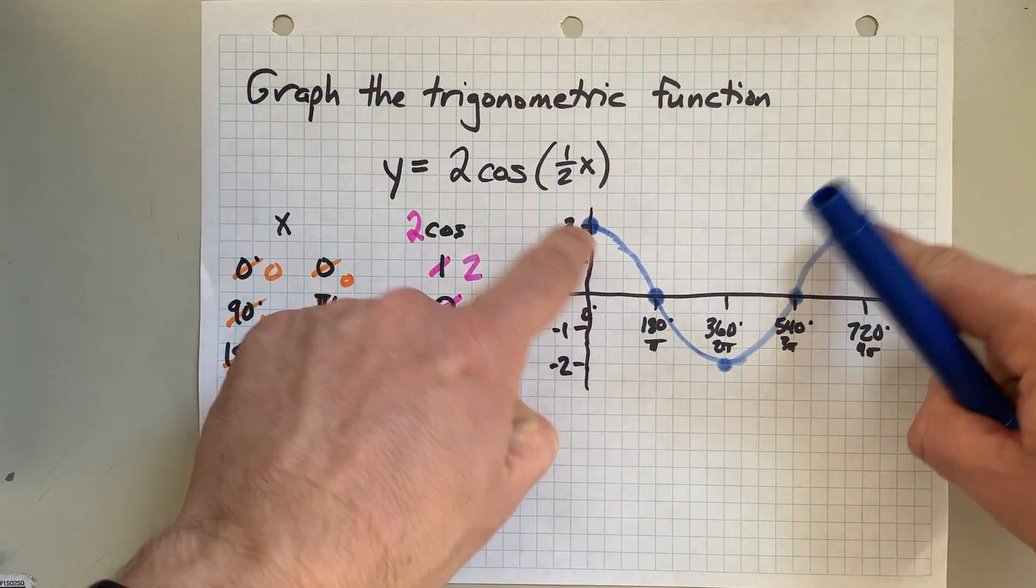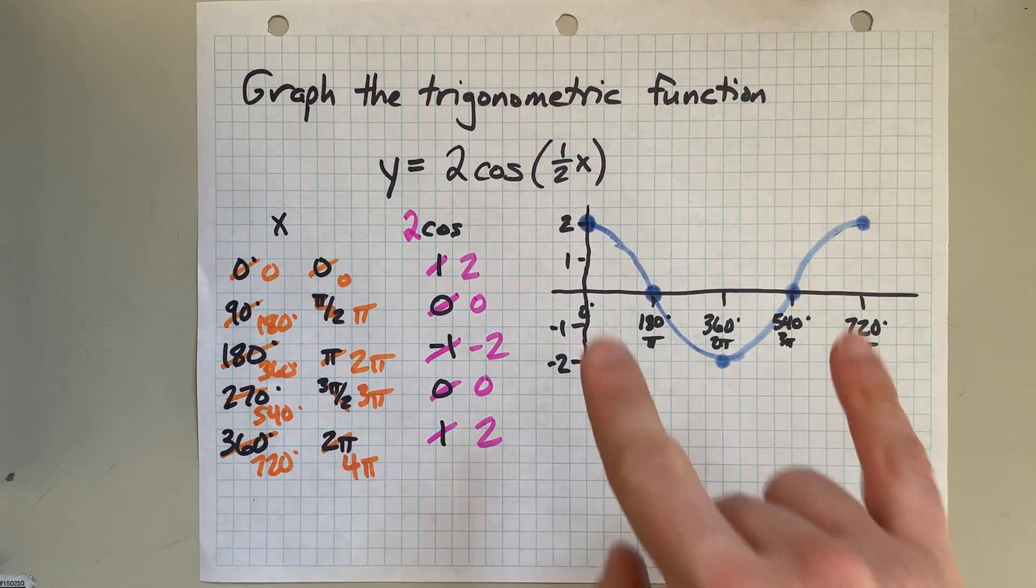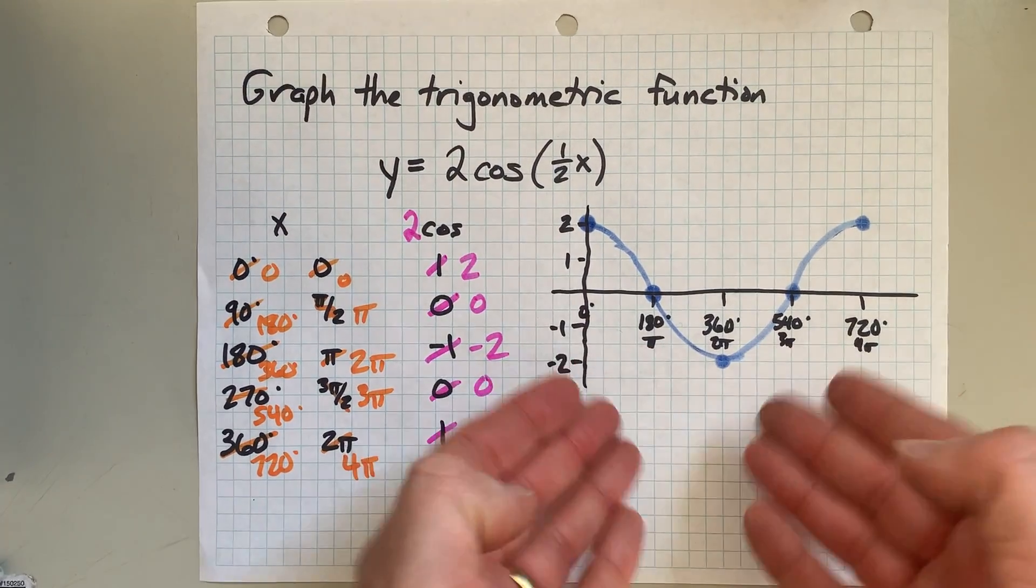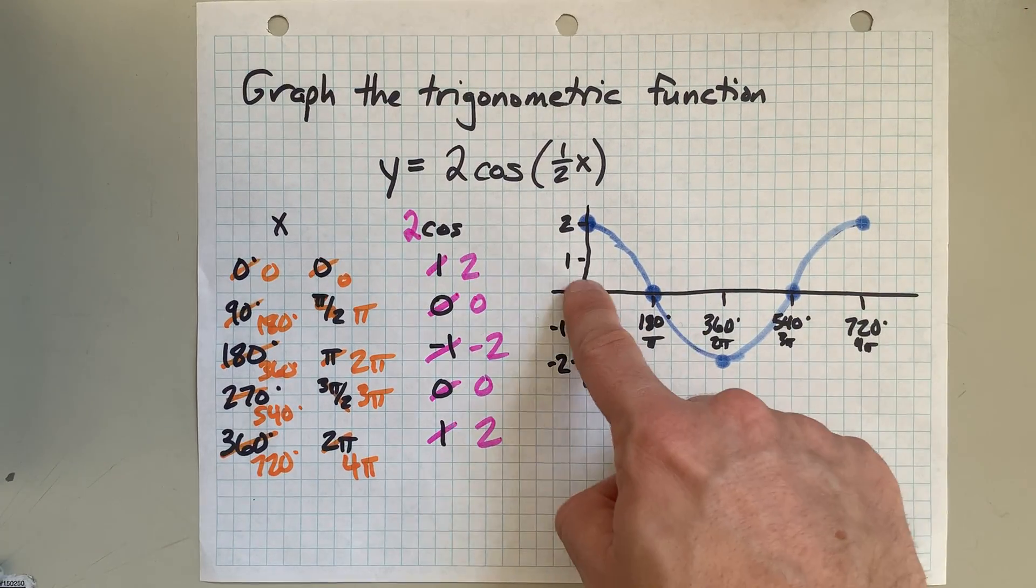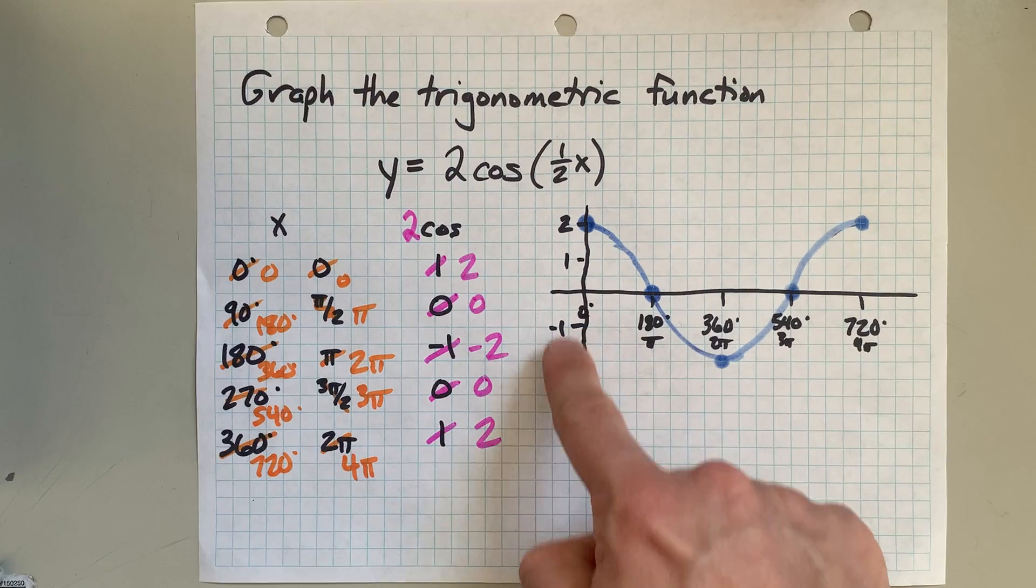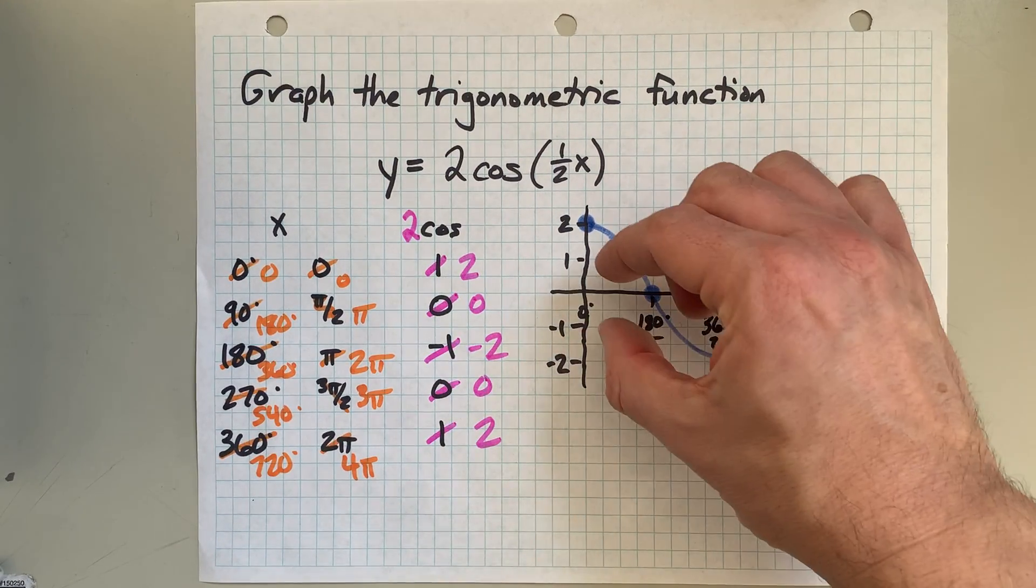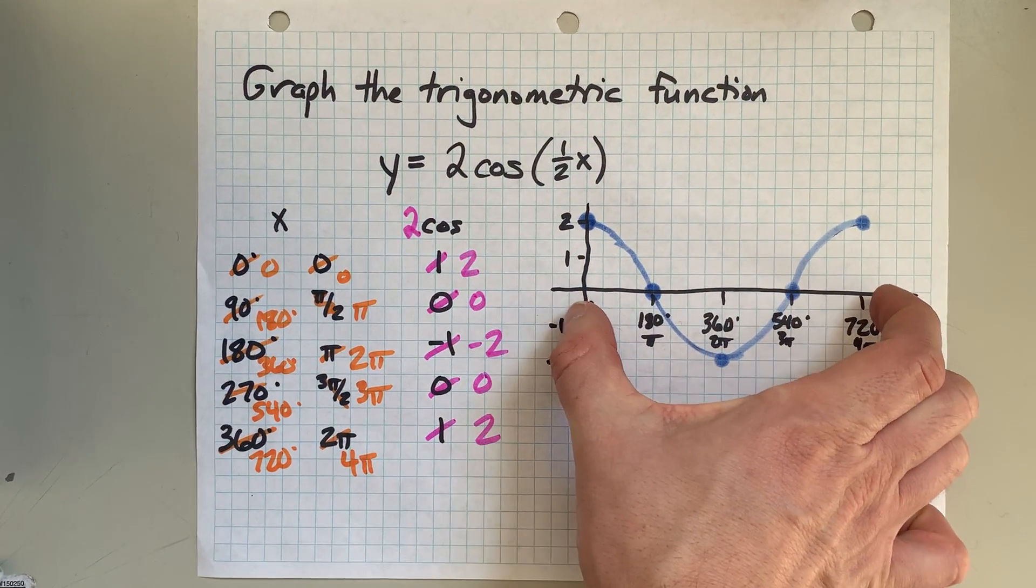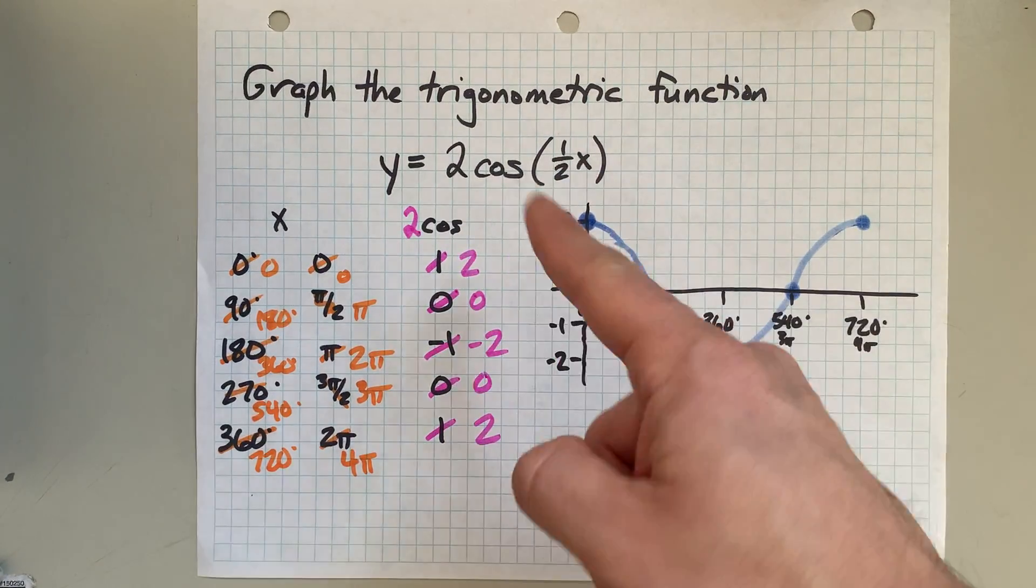Now, this function continues forever in both directions. I don't know how many cycles you were asked to do. But this repeats over and over and over again. Spaced out the same amount. This looks just like a regular coast graph. The original cosine graph only went up to 1 and down to negative 1. And it only went over to 360 for one cycle. But we've stretched by 2 vertically and we've stretched by 2 horizontally. Get it? Got it? Good.